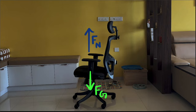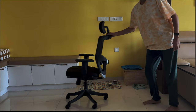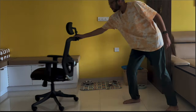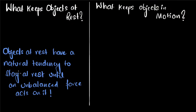Balanced forces will not make this chair move. If you want to get this chair in motion, you have to put an unbalanced force on it. For example, when I push on it, there's friction opposing it, but my applied force is bigger than the frictional force, so these forces are not balanced. When I apply an unbalanced force on it, that's when the chair starts to move.